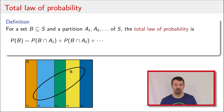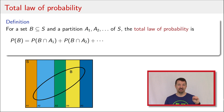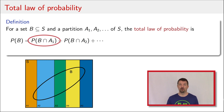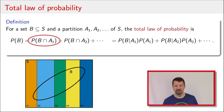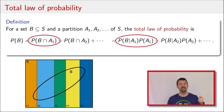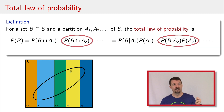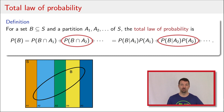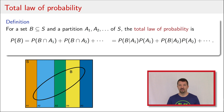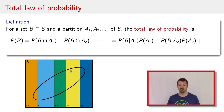The second step in the total law is that we can calculate the intersection of B and each event in the partition using our definition for conditional probability. That is, the probability of B and A1 equals the probability of B given A1 times the probability of A1. We can do the same for A2: the probability of B given A2 times the probability of A2, and so forth. This total law of probability is what we'll commonly use to calculate the denominator in Bayes' Rule.